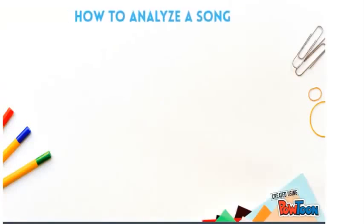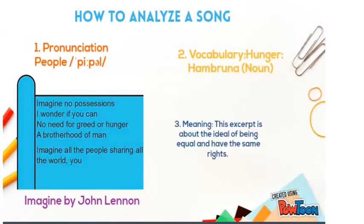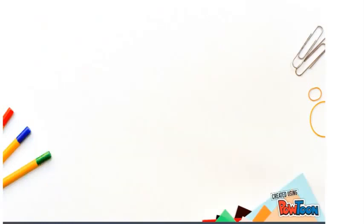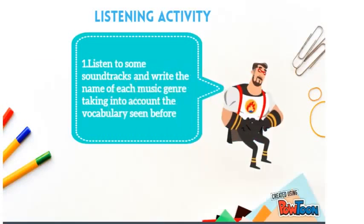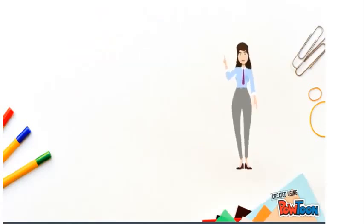We're going to see how to analyze a song. We have this episode — 'Imagine' by John Lennon — and we have three important aspects: pronunciation, vocabulary, and meaning. You'll be listening to some soundtracks and writing the name of each music genre, taking into account the vocabulary seen before. Complete the following chart based on the audio.